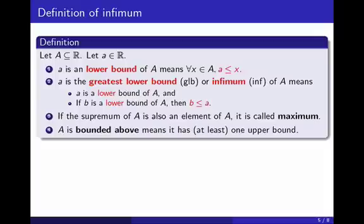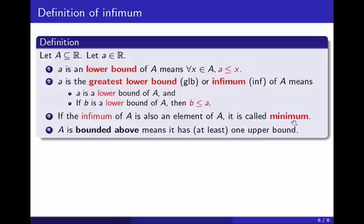which is what we call the greatest lower bound, or infimum. The infimum is simply a number which is a lower bound of the set and is greater than all other lower bounds of the set. The infimum may or may not be an element of the set. When it is also an element of the set, we call it the minimum.